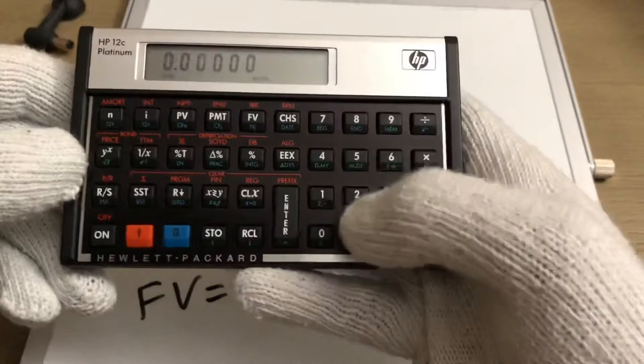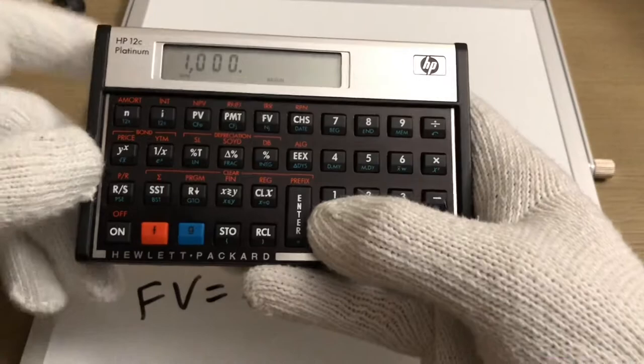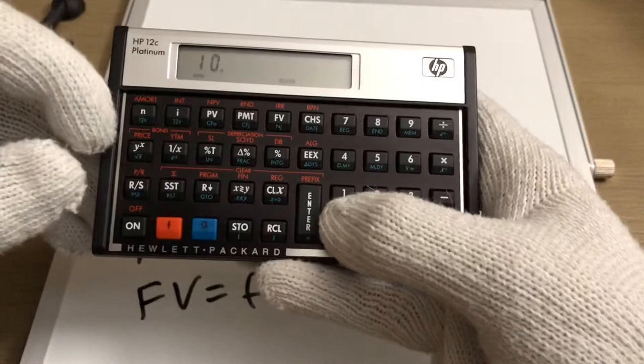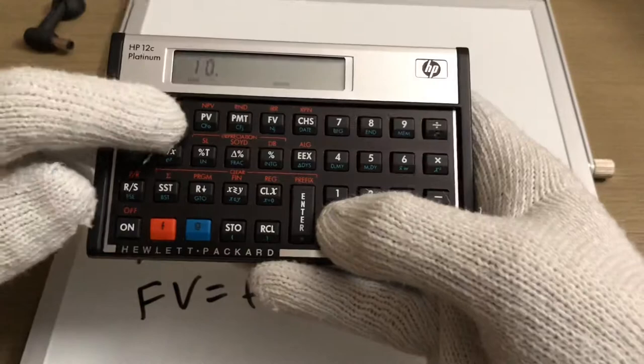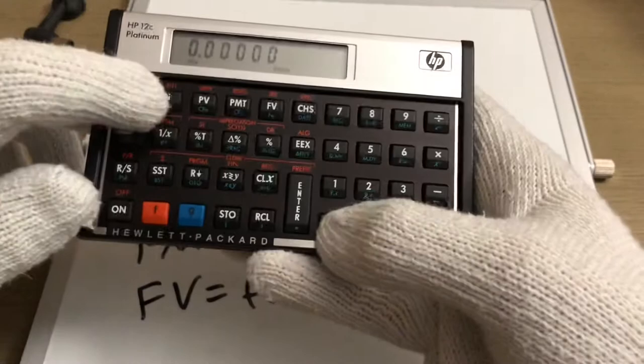We'll go with $1000, that's going to be the present value, over 10 years for the number of periods, at 10% interest rate which is the I, with zero payments, zero dollars in payments.